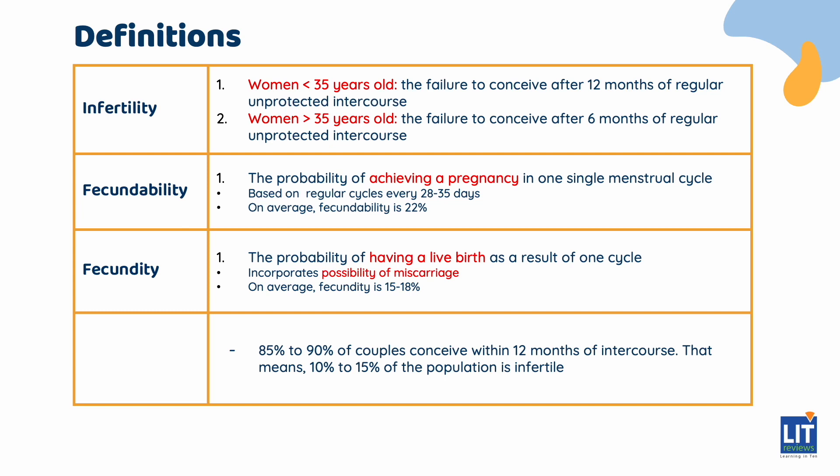The next term is fecundability. Fecundability is the probability of achieving a pregnancy in one single menstrual cycle, based on regular cycles every 28 to 35 days. For the average couple, fecundability is about 22%. Not to be confused with fecundability is fecundity, which is the probability of having a live birth within one cycle. It incorporates the possibility of miscarriage each cycle. For the average couple, fecundity is about 15 to 18%.